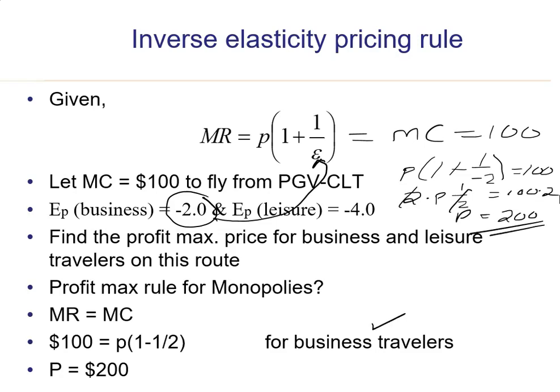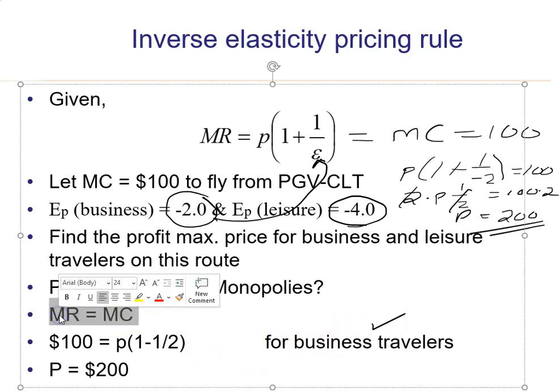Now calculate the profit-maximizing price for the leisure traveler on your own, following the same approach. You should find a price that is actually smaller than $200 if you do the algebra correctly. This has shown you how to find and apply the inverse price elasticity rule, knowing that a monopolist maximizes profits where MR equals MC.